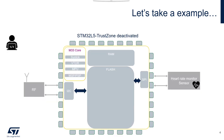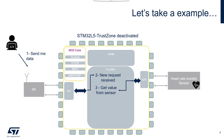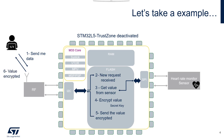My concrete example is an air rate monitor. We have a sensor and an RF module, so it can be accessed remotely. A remote user can send a request - 'send me data' - which arrives through the RF module. It goes through interfaces in our STM32, and the code in flash handles this request. It analyzes it, and if correct, gets the value from the sensor through the SPI interface. Then we encrypt this value because it is sensitive, using a secret key stored in flash, and send the encrypted value back through the RF module to the end user.